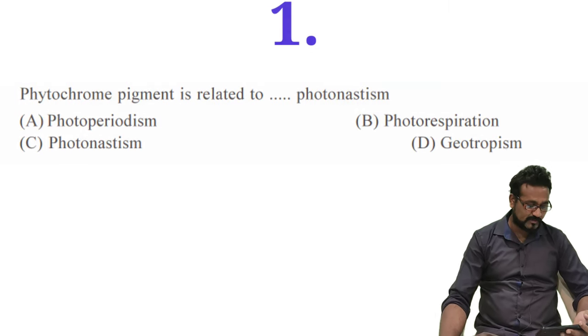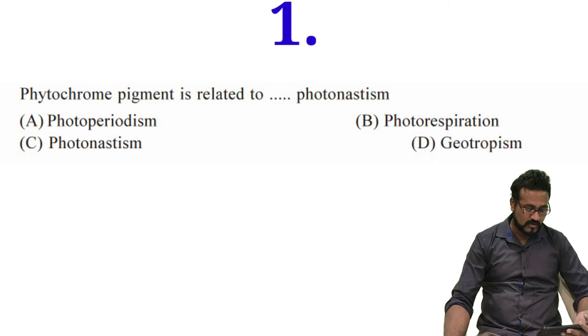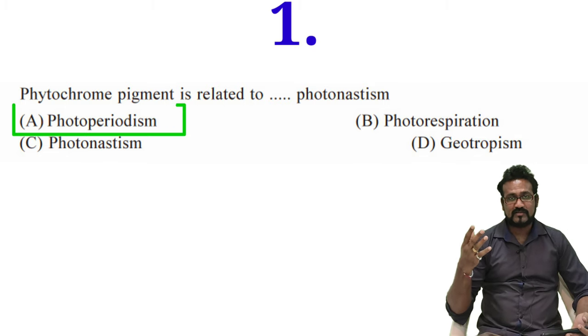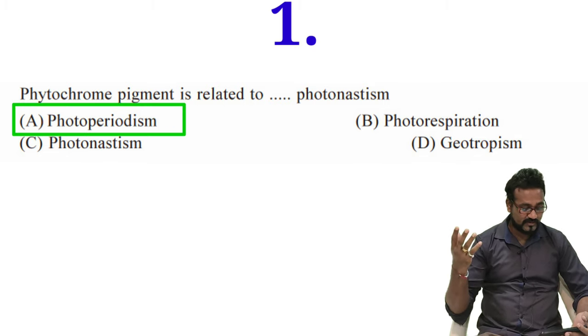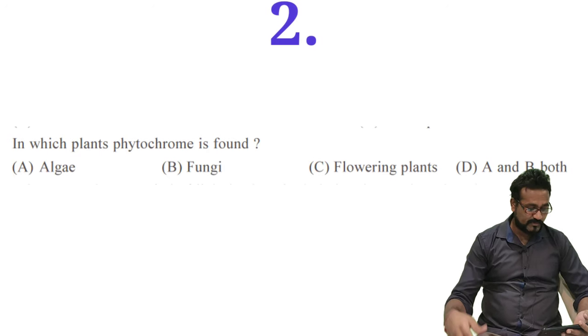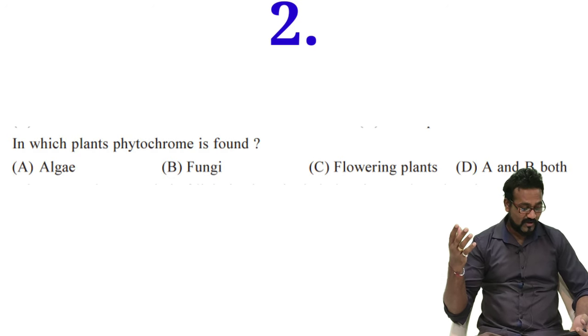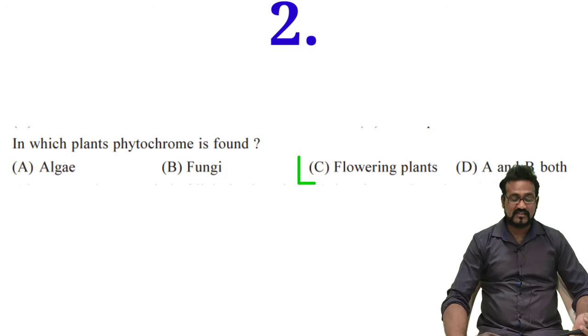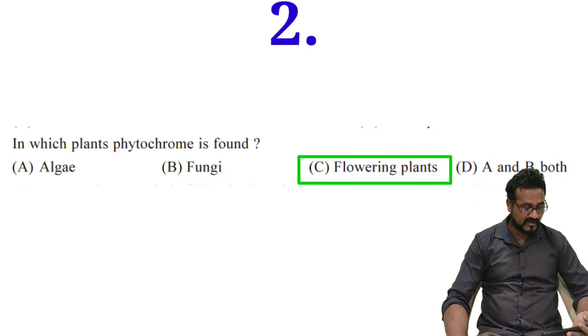The first question on the screen is phytochrome pigment is related to - options are photoperiodism, photorespiration, photonasty, and geotropism. The possible answer is photoperiodism. Obviously phytochrome is always related to it. Second question is in which plant phytochrome is found? Options are algae, fungi, flowering plants, A and B both. Obviously phytochrome is responsible for flowering, so option C is the answer.